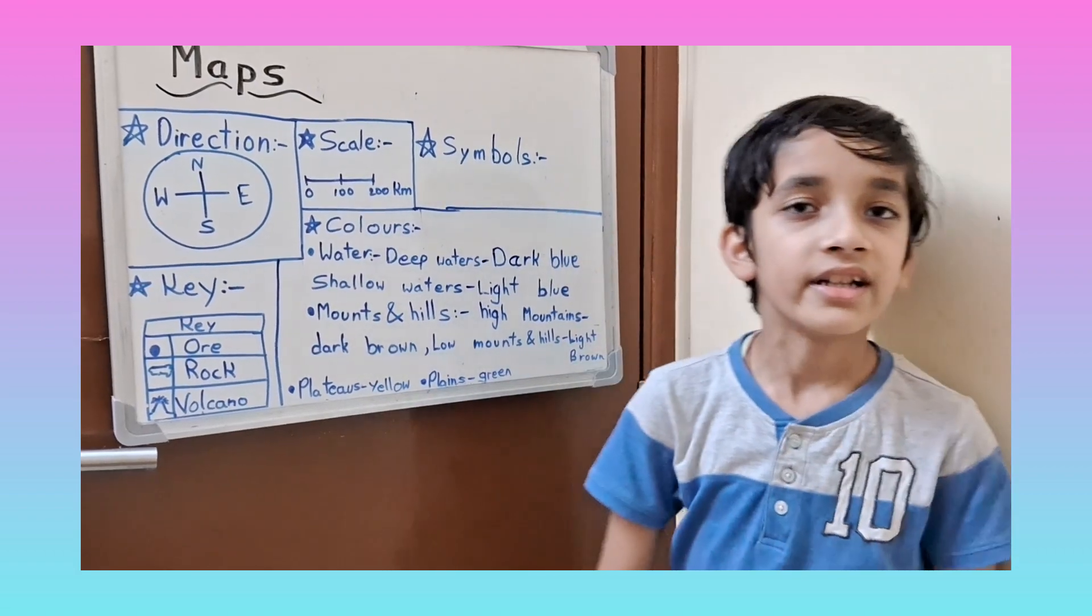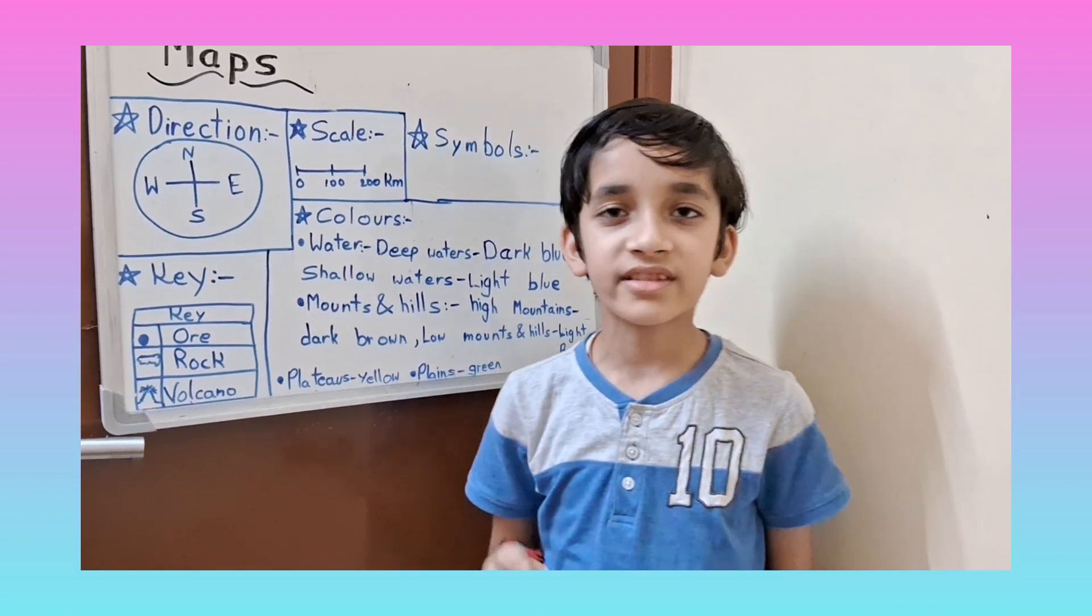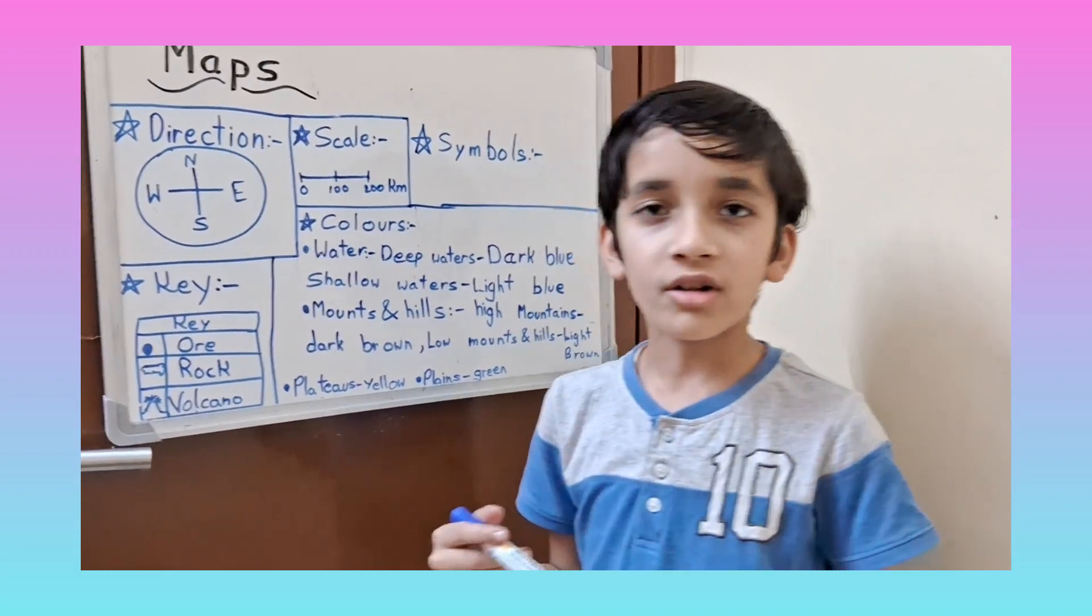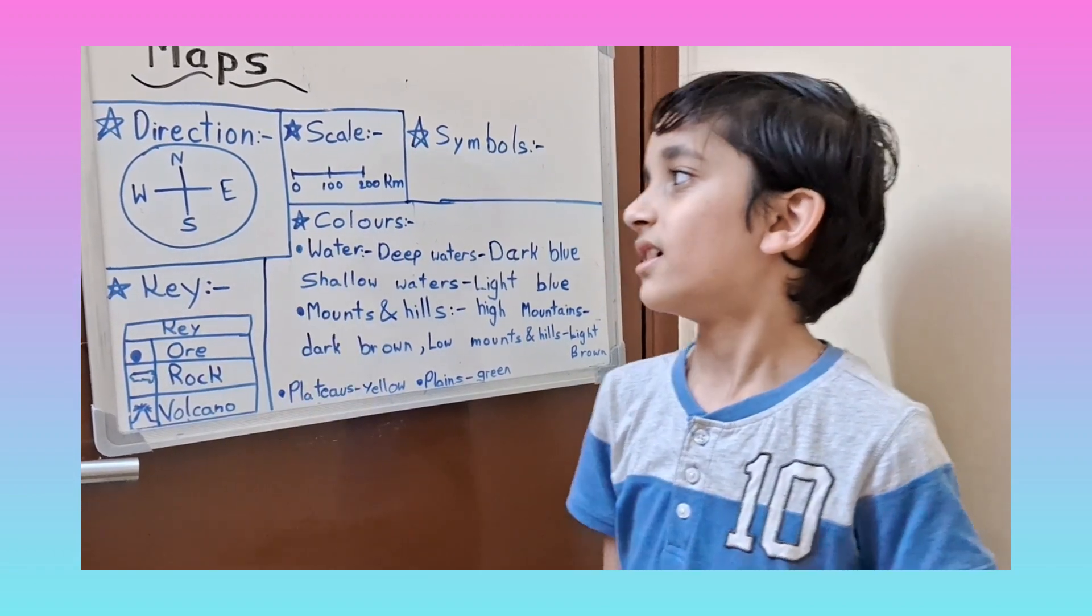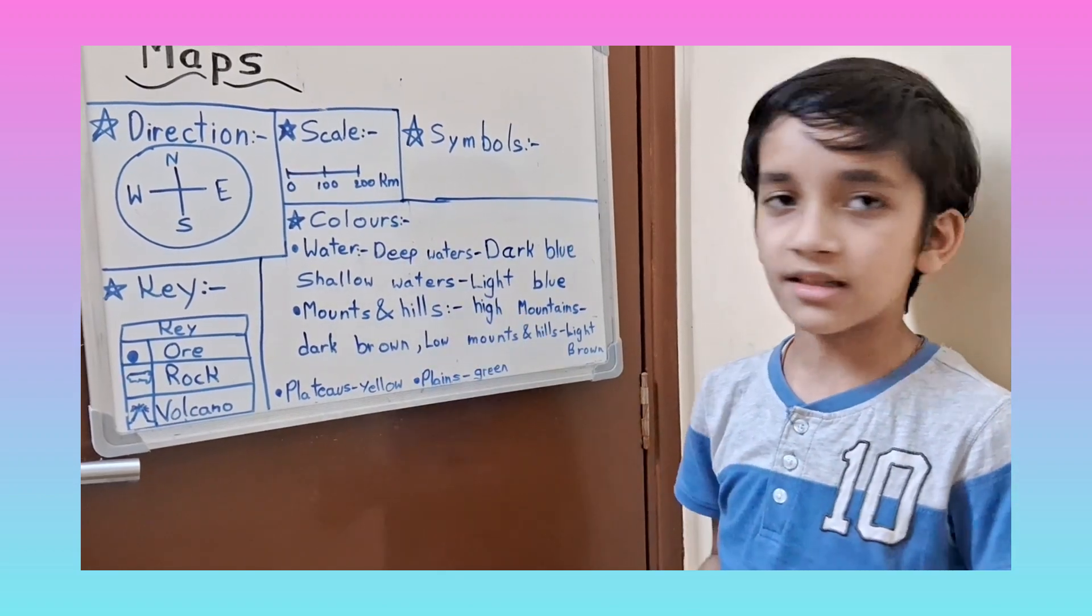First, the direction. It is always the same in all maps. They show it sometimes in detail and sometimes not in detail. Normally it is shown as north, south, east, and west, like a compass.